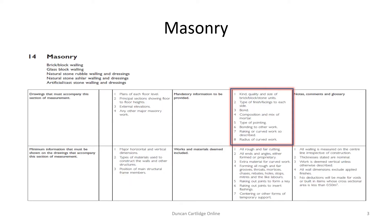Section 14 of New Rules of Measurement II defines how to measure and describe masonry. Items 1 to 5 in the highlighted box are particularly important, as these items impact on the cost of the masonry being measured and therefore must be included in the description.